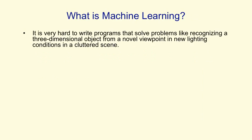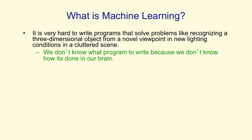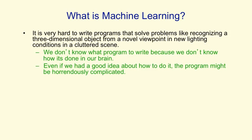The reason we need machine learning is that there are some problems where it's very hard to write the programs. Recognizing a three-dimensional object, for example, when it's from a novel viewpoint in new lighting conditions in a cluttered scene, is very hard to do. We don't know what program to write because we don't know how it's done in our brain. And even if we did know, it might be a horrendously complicated program.